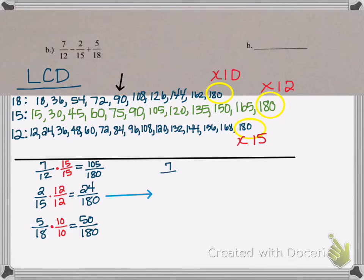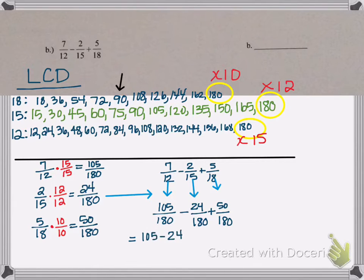So our original problem was 7 twelfths minus 2 fifteenths plus 5 eighteenths, which is going to be written as 105 over 180 minus 24 over 180 plus 50 over 180. Now that we have the same denominator, we can combine the numerators. This becomes 105 minus 24 plus 50 all over 180 for a final answer of 131 over 180.